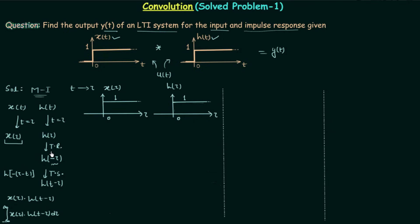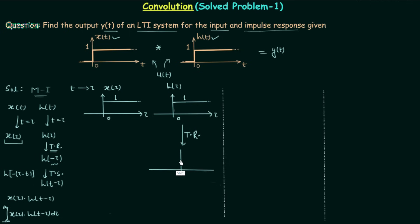Now we move to step 2, the time reversal. We fix x(τ) and perform the time reversal of signal h(τ). This gives us h(−τ), which is the mirror image of h(τ) about the y-axis. We are done with step 2.